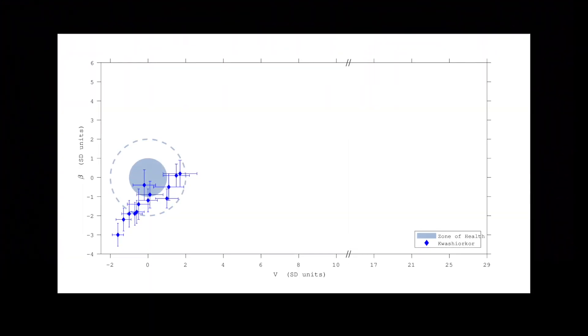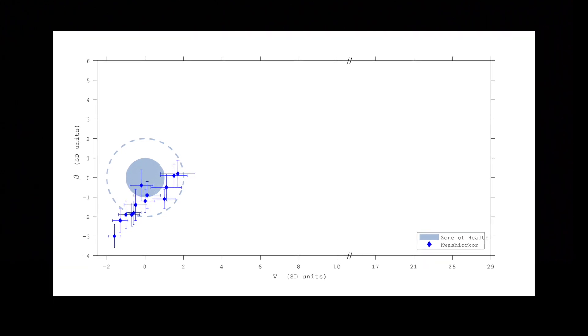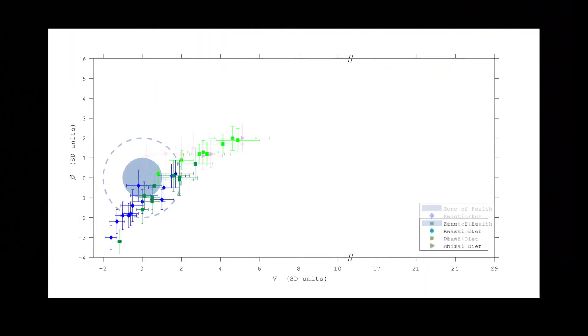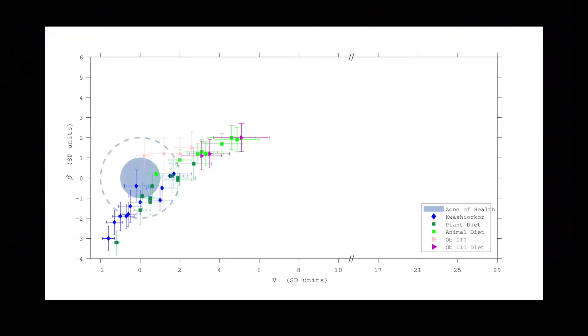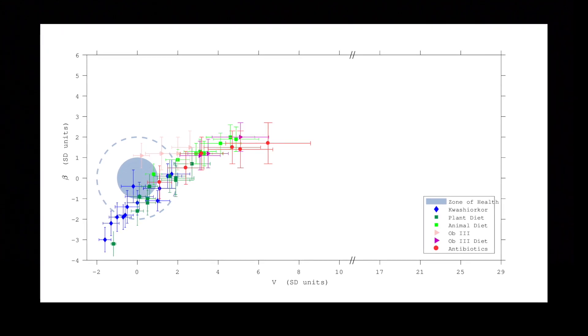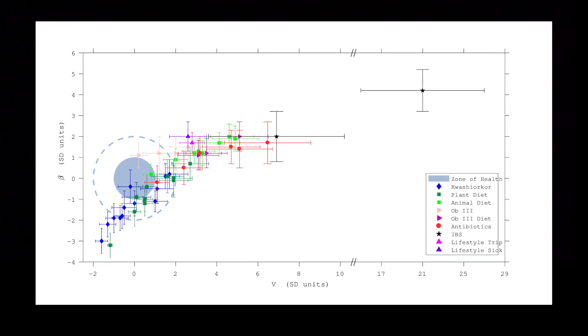Therefore, time variations of these complex systems can be characterized by just two parameters. More importantly, these two numbers clearly distinguish healthy subjects from those whose gut microbiota was compromised, for example, by an altered diet, antibiotic intake, a salmonella infection, or a trip abroad.